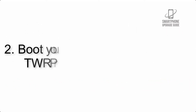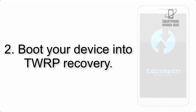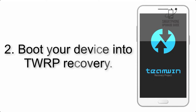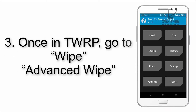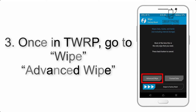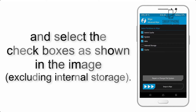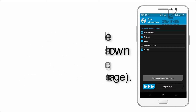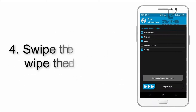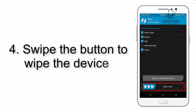Step 2: Boot your device into TWRP recovery. Once in TWRP, click on Wipe, then Advanced Wipe, and select the checkboxes as shown in the image, excluding internal storage.